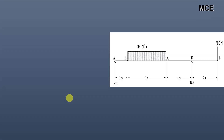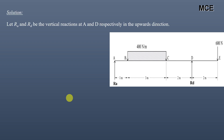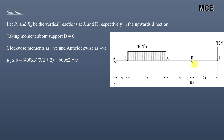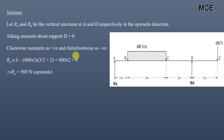This will become clearer by solving the question. First we calculate the reactions. Assume Ra and Rd are the vertical reactions at supports A and D respectively, acting upward. Taking moments about support D, with clockwise moments positive and anti-clockwise negative, this gives: Ra × 6 − 400 × 3 × (3/2 + 2) + 600 × 2 = 0.